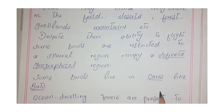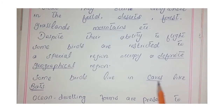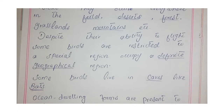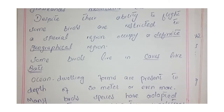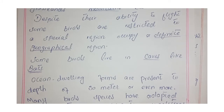Some birds live in caves, like bats — they are found in caves. Ocean-dwelling forms are present to a depth of 30 meters or even more — they are found at that depth in the sea.